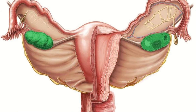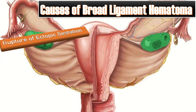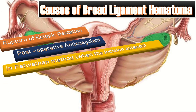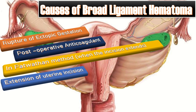What causes broad ligament hematoma formation? Possible causes include rupture of ectopic gestation, post-operative anticoagulant use, and in the Patwardhan method when the incision extends. In cases of trauma, or extension of the hysterotomy at the time of cesarean section, broad ligament hematoma can result, especially when too low an incision is given.